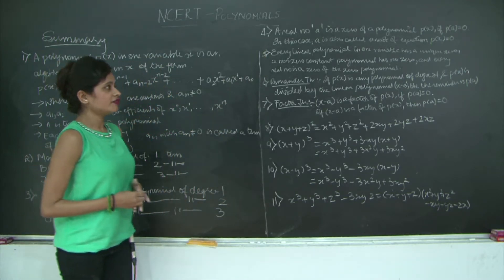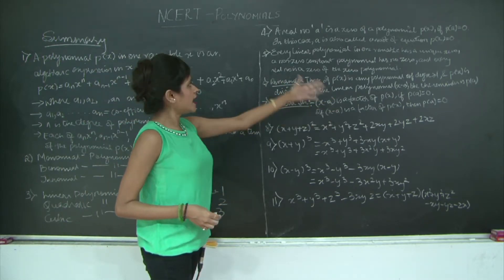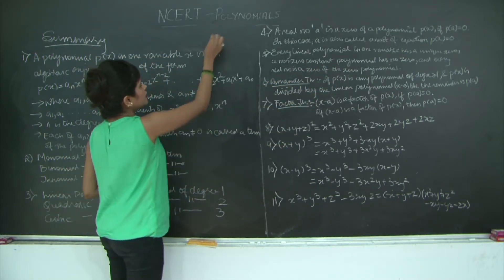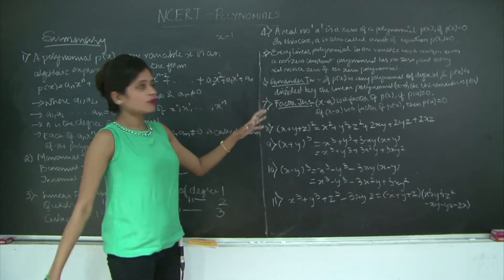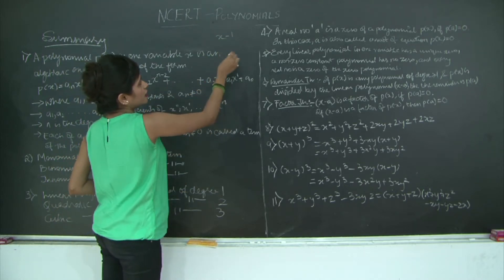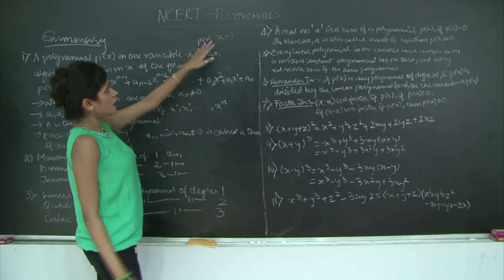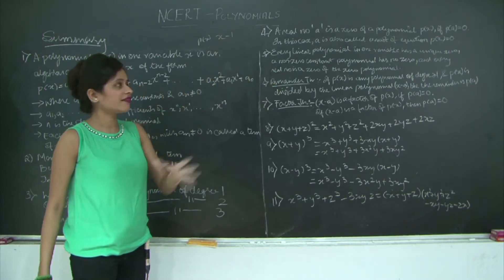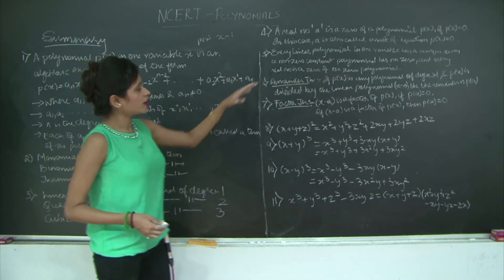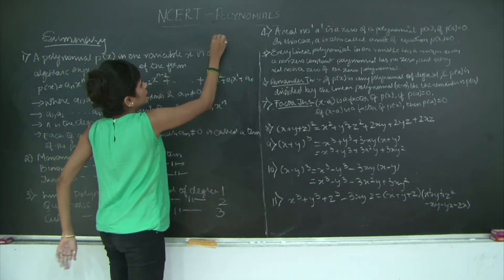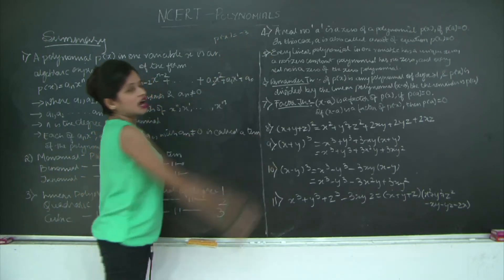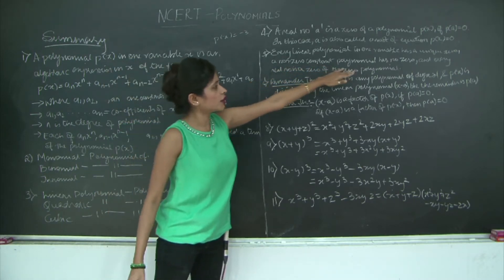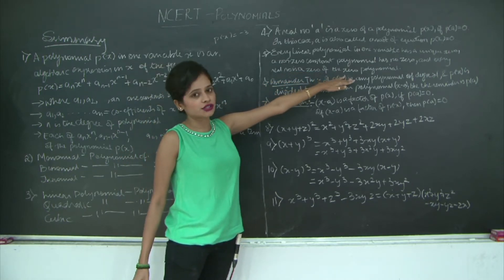Every linear polynomial in one variable has a unique zero. A non-zero constant polynomial has no zero, and every real number is a zero of the zero polynomial. Let me explain this to you. A linear polynomial can be something like x - 1. This will have only one zero. How many values would give me 0? Only 1. If I place 1 instead of x, I will get 0, so there will only be one unique value for a linear polynomial. But what about a non-zero constant polynomial? If I have my P(x) as -3, how to find its zero? We do not have anything to substitute in place of x. So this statement is valid.